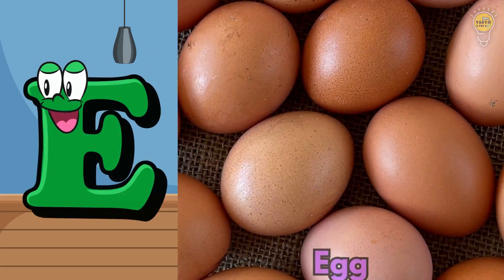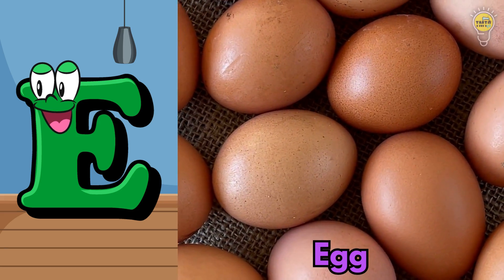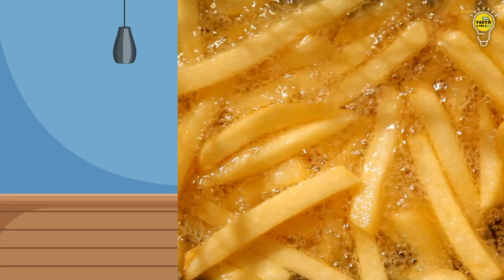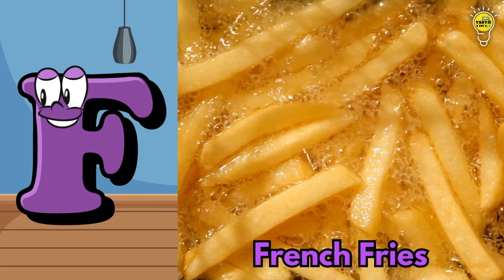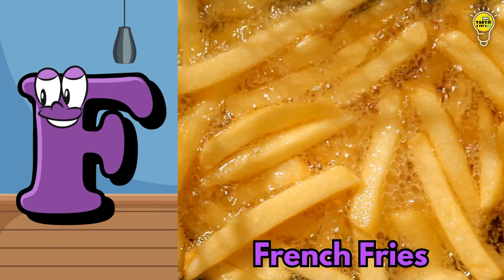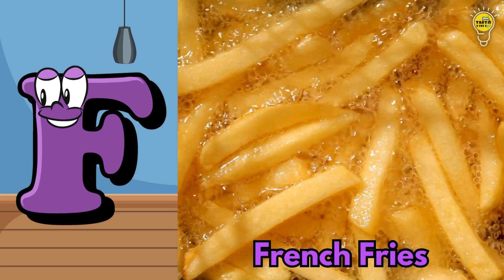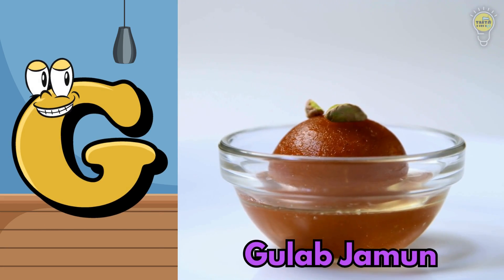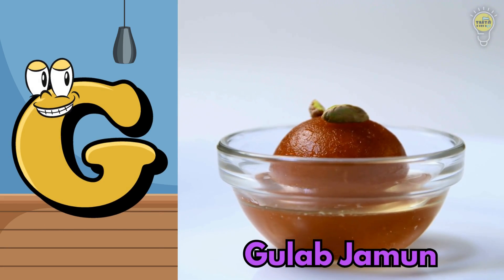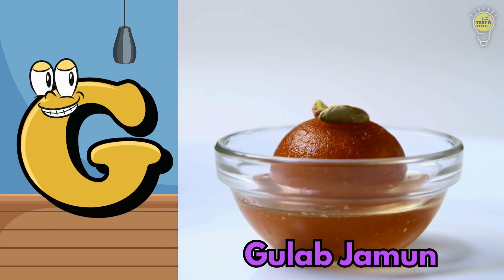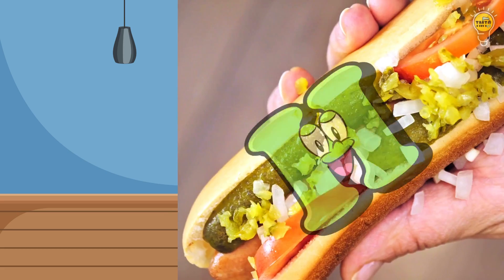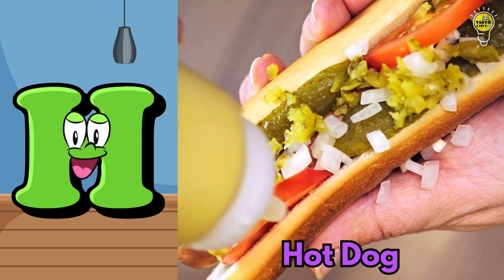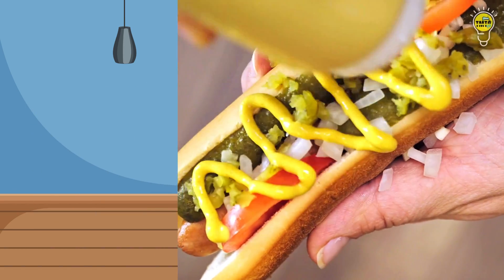E is for Egg. Egg. F is for French Fries. F, F, French Fries. G is for Gulab Jamun. G, G, Gulab Jamun. H is for Hot Dog. H, H, Hot Dog.